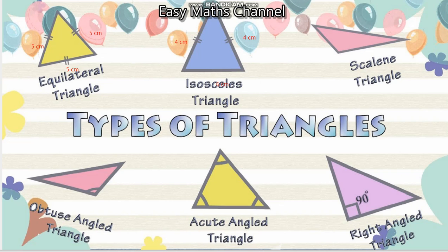If you look at this, all 3 sides are different values — for example, 7 cm, 2 cm, and 4 cm. Yes, if all 3 are different, it is called a scalene triangle.